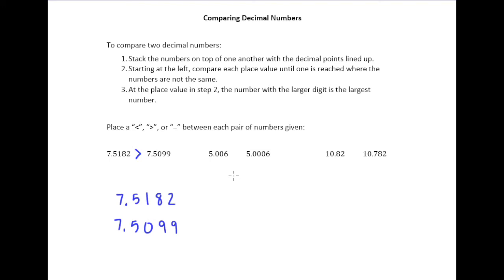We can do a similar thing here. We have 5.006 and then 5.0006. So they're the same here, they're the same here, they're the same here. They first differ in the thousandths place and obviously six is bigger than zero. And so 5.006 is a bigger number than 5.0006.